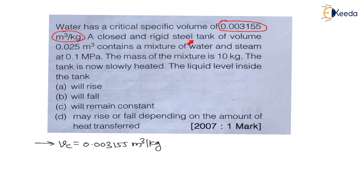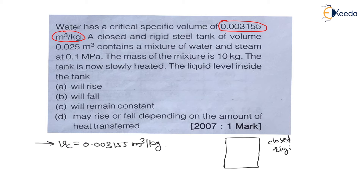A closed and rigid steel tank of volume 0.025 m³ contains a mixture of water and steam at 0.1 MPa. The tank is closed and rigid, having a volume of 0.025 m³, and it contains a mixture of water and steam at 0.1 MPa.